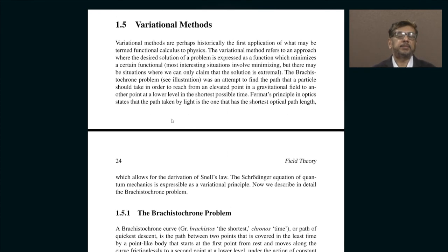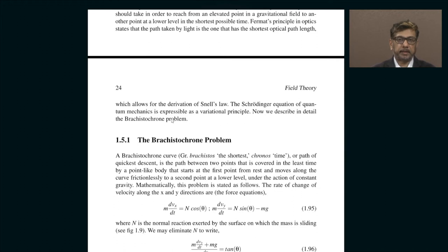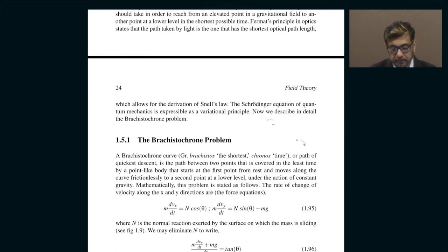The remark that any dynamical equation can be thought of as a consequence of an extremum principle finds a dramatic application in the famous Brachistochrone problem. 'Brachistochrone' comes from Greek: brakhistos means shortest, and khronos means time. The problem asks: what is the path that a mass sliding along a frictionless curve should take in order to reach its destination in the shortest possible time? You have a starting point and an ending point at a lower potential energy.